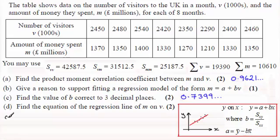So to get A, A is going to be equal to not Y bar this time, the mean of Y, but it would be the mean of M. And so that's going to be the sum of all the M values divided by how many we've got, which is 8.